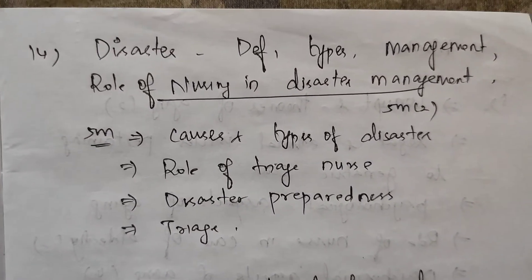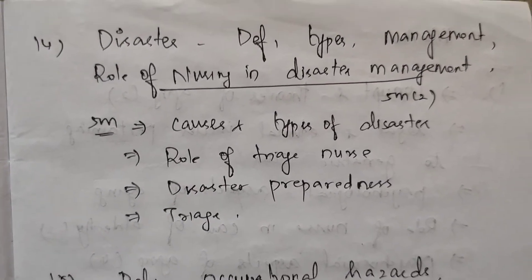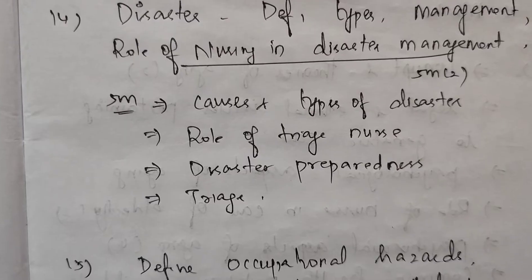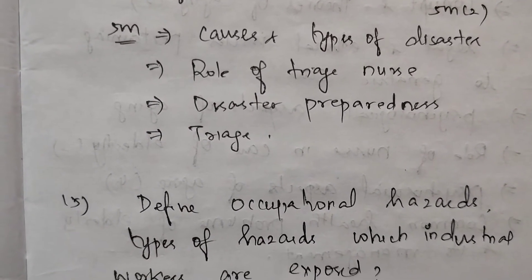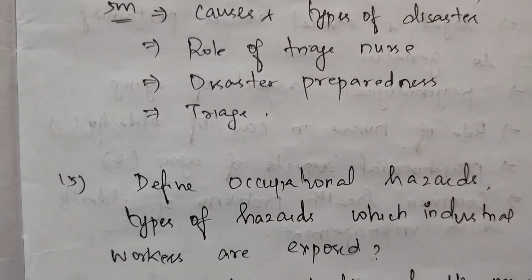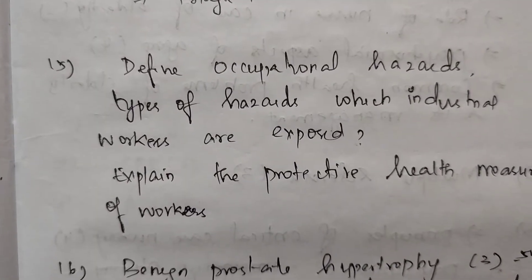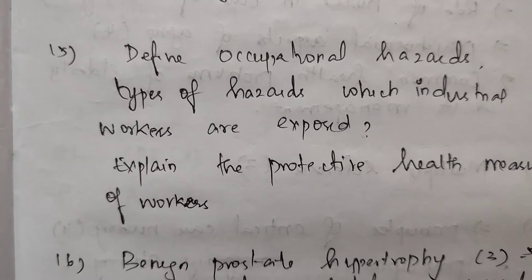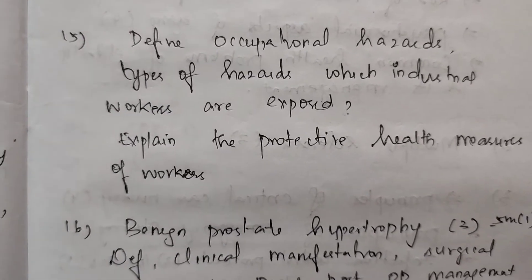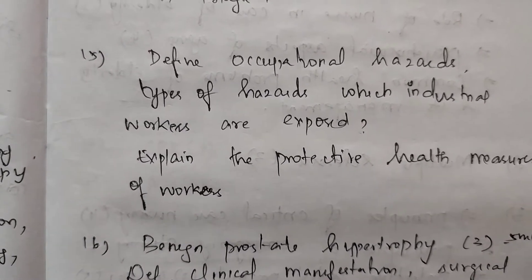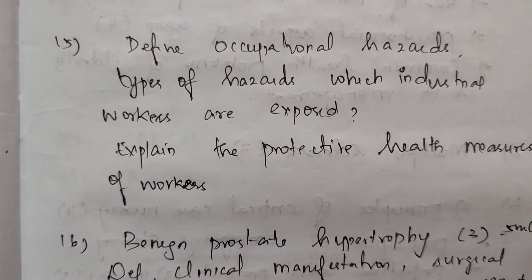Next, disaster: definition, types, management, role of nursing in disaster management — 15 marks. In 5 marks, role of nursing in disaster management two times, causes and types of disaster, role of triage nurse, disaster preparedness, and triage. Also in 15 marks: define occupational hazards, types of hazards which industrial workers are exposed to, and explain the protective health measures of workers.